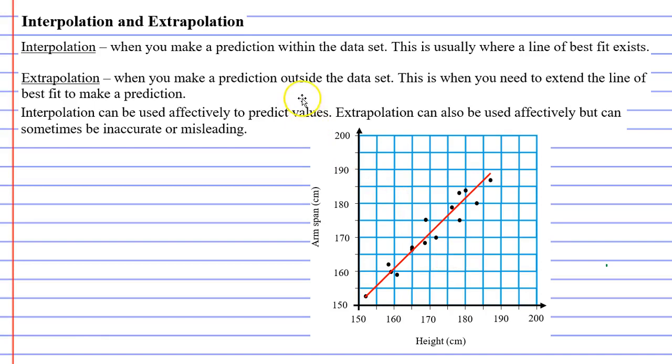And when we're talking about outside the data set, we're talking about points over here on the right, outside the cluster of points, or also it could be points over here on the left, outside these cluster of points.